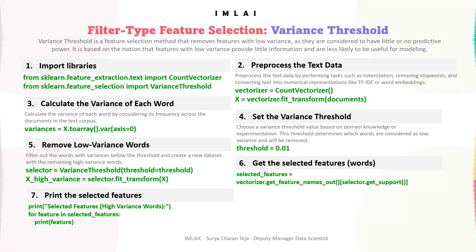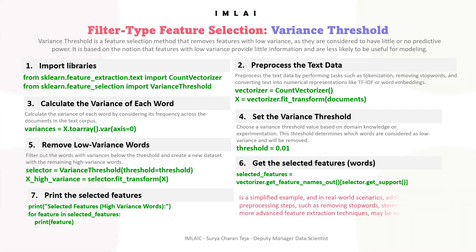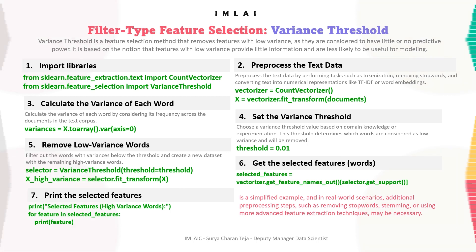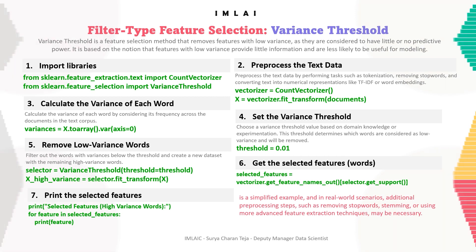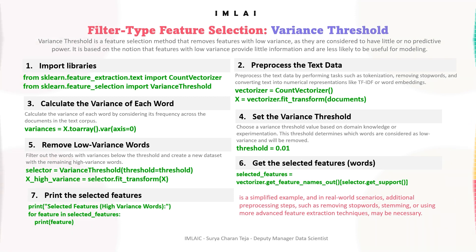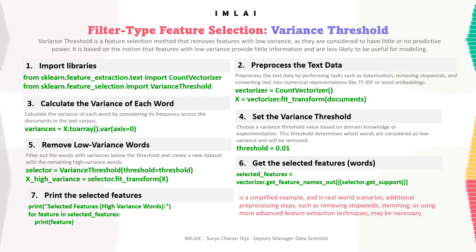Variance threshold is a feature selection method that removes features with low variance, as they are considered to have little or no predictive power. Features with low variance provide little information and are less likely to be useful for modeling. Note that the code here is a simplified example — in real-world scenarios, additional pre-processing steps such as removing stop words, stemming, or using advanced feature extraction techniques may be necessary. This is the variance threshold method, which comes under filter-type feature selection.